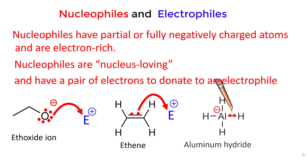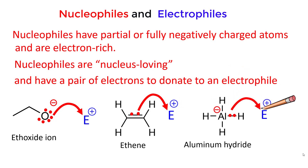Or the two electrons can be in a polar covalent sigma bond, such as aluminum hydride.